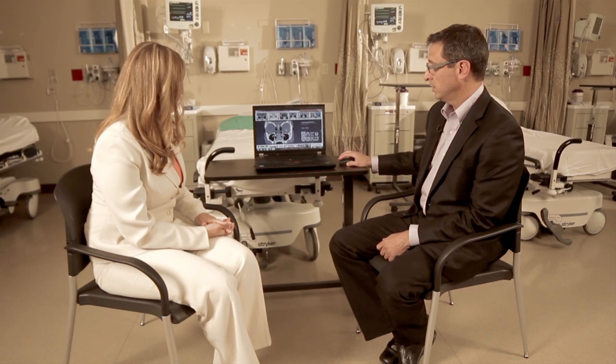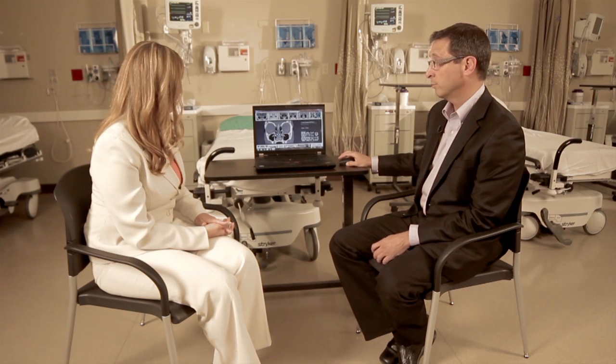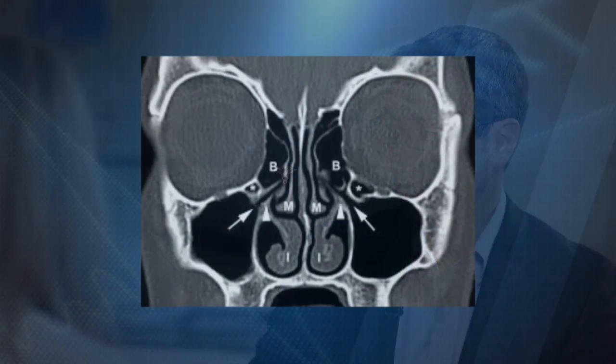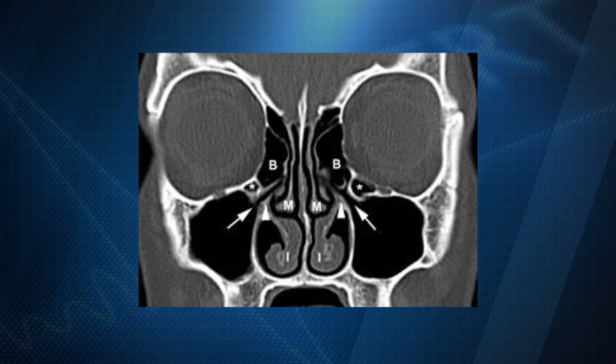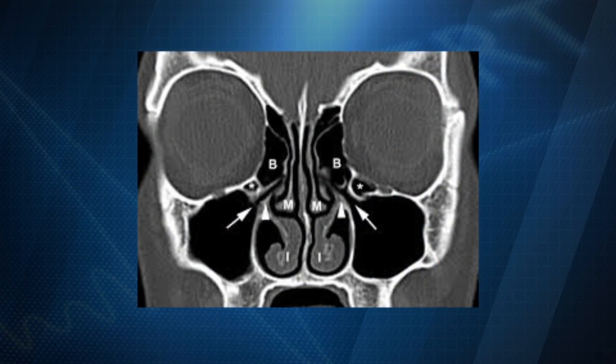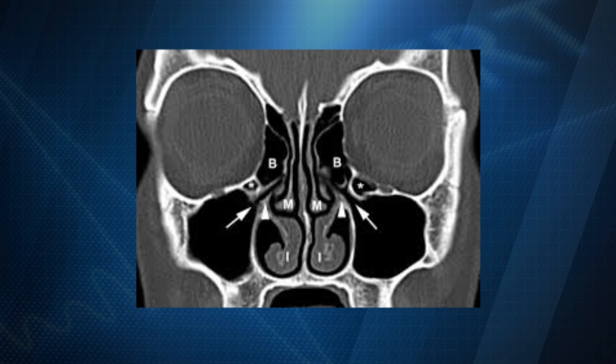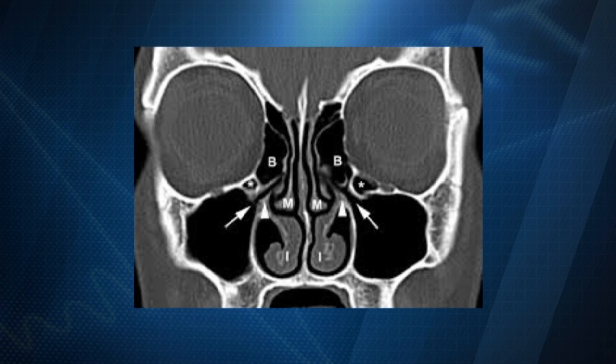I have a CAT scan here we can discuss. This is an example of someone who has healthy sinuses. Here's the wall, which is the septum. These structures that I'm pointing to are called the turbinates — they help to warm and moisturize the air. Here are the eye sockets and here are the sinuses. They're called paranasal sinuses because they live next to the nose.